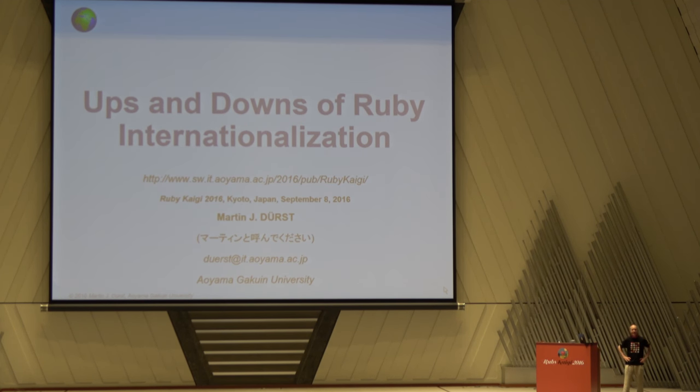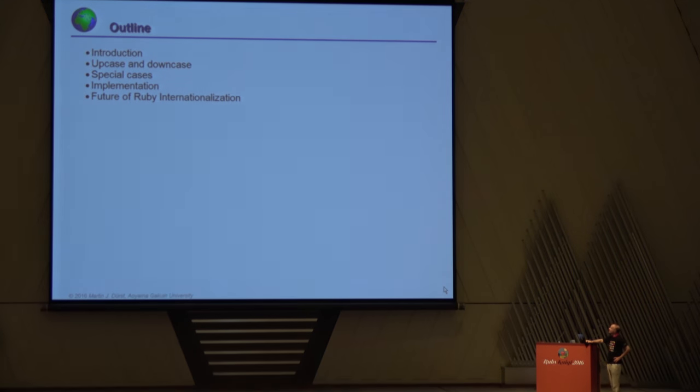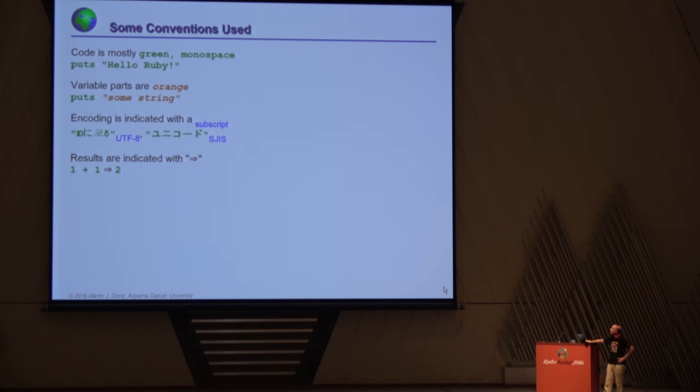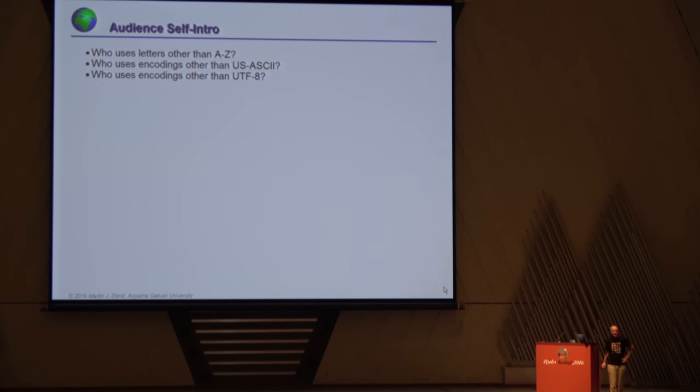Hello, everybody. Can you hear me? Thank you. Let's go. This is the outline. There will be about four or five parts. These are some of the conventions used. It's pretty much easy to know. But I would like to know something about you. Question two: who, in everyday writing, uses more than the letters A to Z? Who uses other encodings than US ASCII? That's probably about the same people. Now another question. Who uses other encodings than UTF-8? Still quite a few.